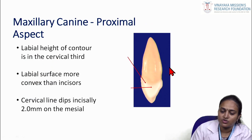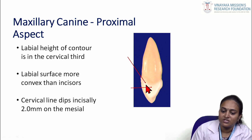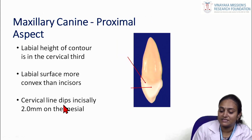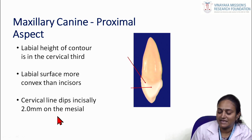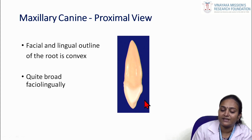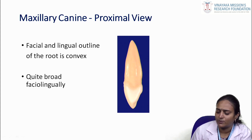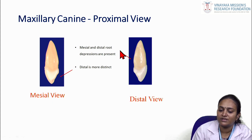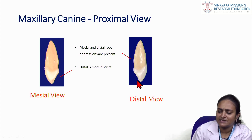From the proximal aspect, the labial height of contour is in the cervical third. The labial surface is more convex than the incisors. The cervical line tips incisally approximately 2 mm on the mesial aspect. The facial and lingual outline of the root are convex and quite broader in the faciolingual area. Mesial and distal root depressions are present, and the distal depression is more distinct.